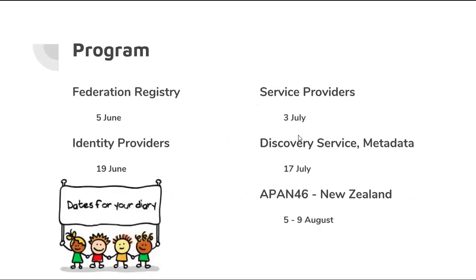The program for the next eight weeks: today we're looking at the federation registry Jagger; in a fortnight I'll be back talking about identity providers; two weeks after that we'll look at service providers and adding them to your federation; beyond that we'll look at discovery and metadata. At APAN 46 in New Zealand we'll look more at the policy side of setting up your federation, wrapping tools in policies and rules to make your federation a production federation.